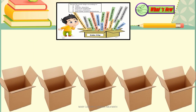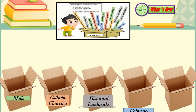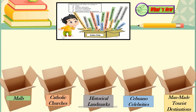Here we have five boxes and we label them: Malls, Catholic Churches, Historical Landmarks, Cebuano Celebrities, and Man-made Tourist Destinations. This time we are going to sort out the places and persons that have distinct characteristics. Whatever your answer is, let's see if it's the same with mine.